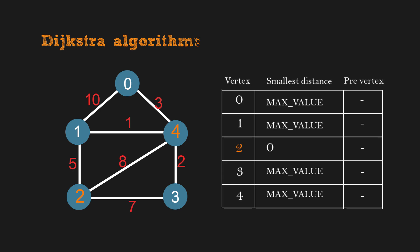Initially, the distance table will look like this. The first column is all vertices in the graph. The second column is the smallest distance from vertex 2 to this vertex. The value is zero to itself. Others are max value at the beginning.